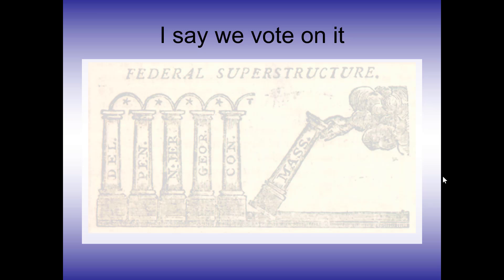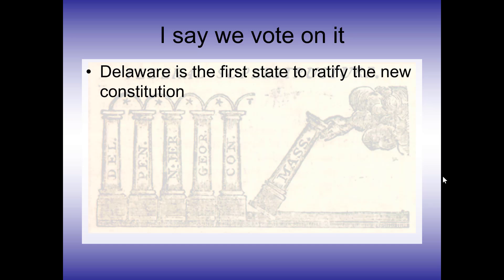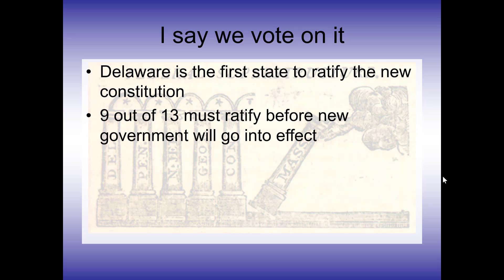The Constitution went out to the states, and Delaware was the first state to ratify the new Constitution. They very quickly adopted it and said yes, they support this. In order for the new Constitution to take effect, they had to have 9 out of the 13 states ratify. New Hampshire was the 9th state to ratify, and once they did, the Constitution was officially able to take effect.